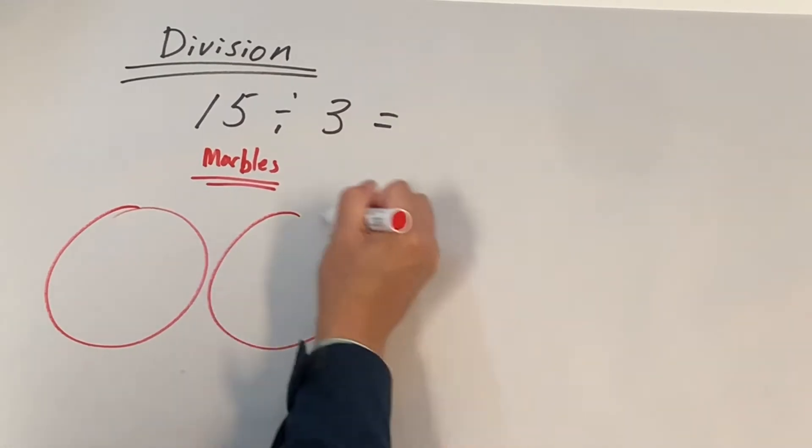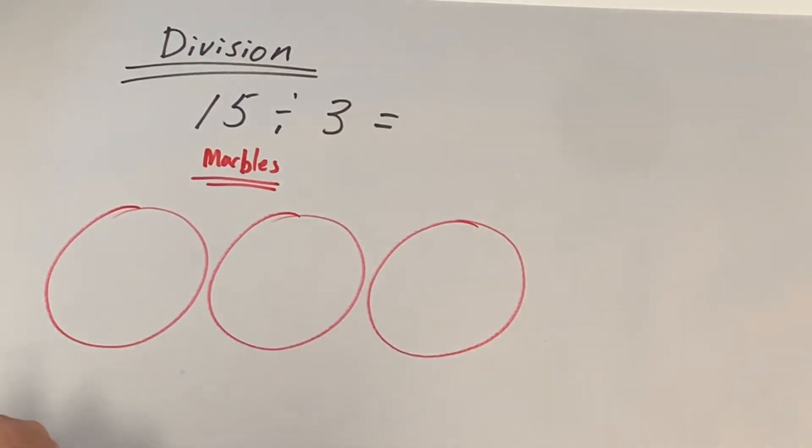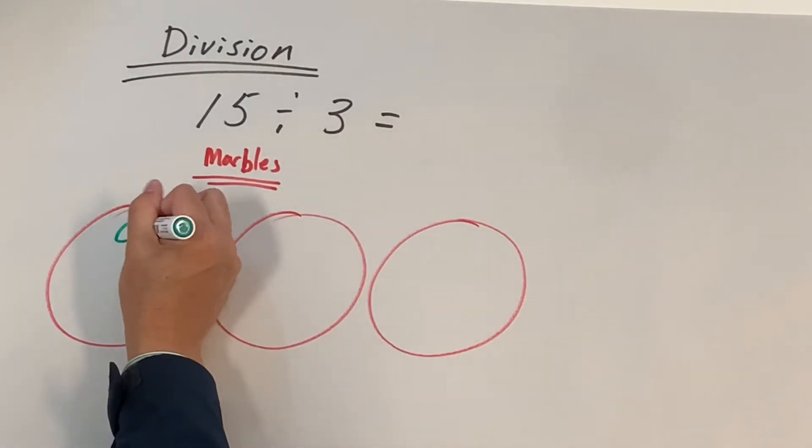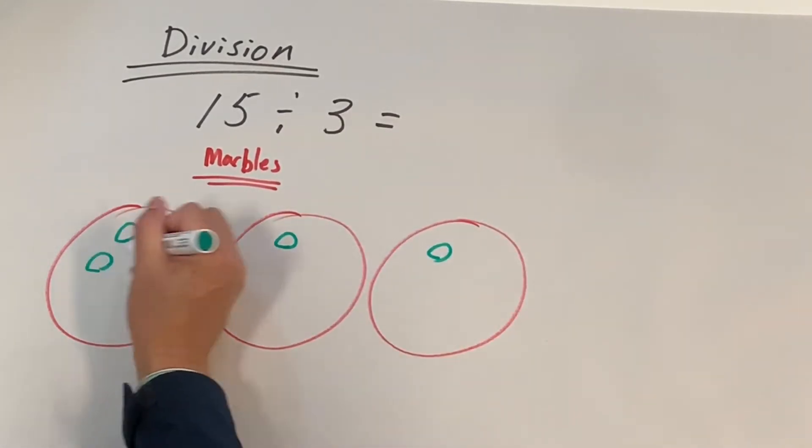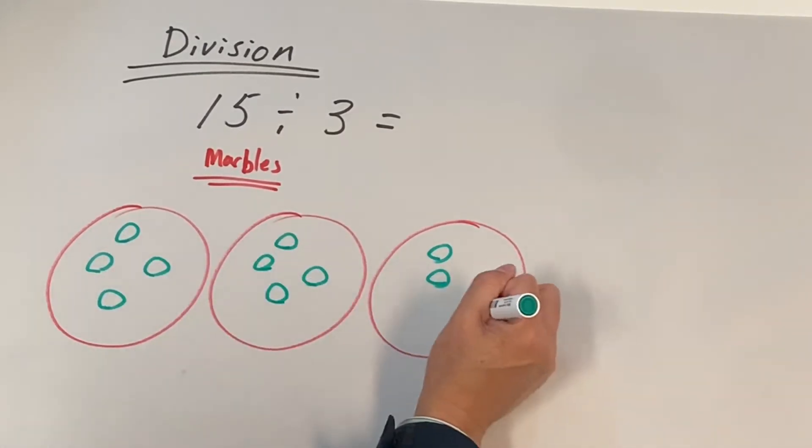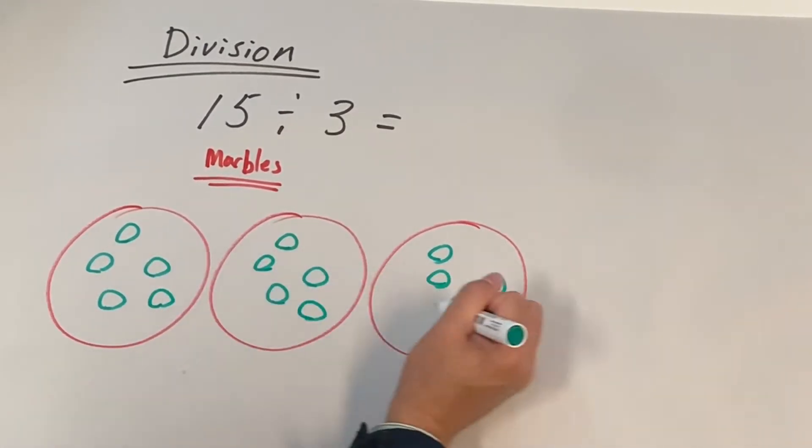So 1, 2, 3. So sharing would be 1, 2, 3, 4, 5, 6, 7, 8, 9, 10, 11, 12, 13, 14, 15.